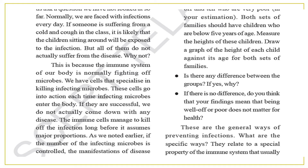We face infections every day. If someone has a cold and they cough, children sitting around will be exposed to the same infection. But all of them do not actually suffer from the disease — because of the immune system of our body, which is normally fighting off the microbes. We have cells that specialize in killing the infectious microbes. These cells go into action each time infecting microbes enter the body. If they are successful, we do not actually come down with any disease. The immune cells manage to kill off the infection long before it assumes major proportions. If the number of infecting microbes is controlled, the manifestation of disease is controlled.